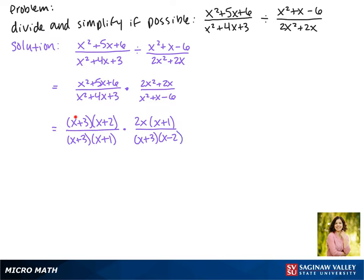Now we want to cancel out factors. We see that in the numerator we have one factor of x plus 3 and in the denominator there are two factors. We can only cancel it out with one of them. Then we also have a factor of x plus 1 in the numerator and denominator, and that's as much as we can cancel.